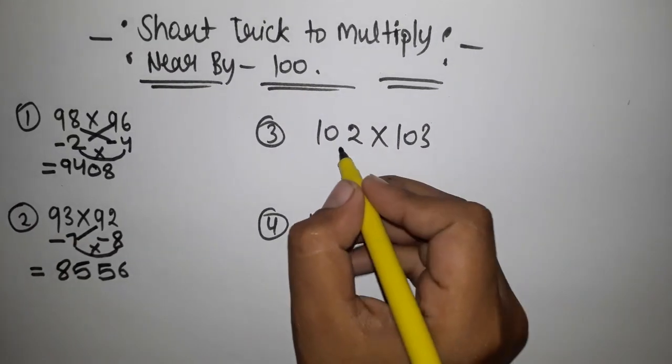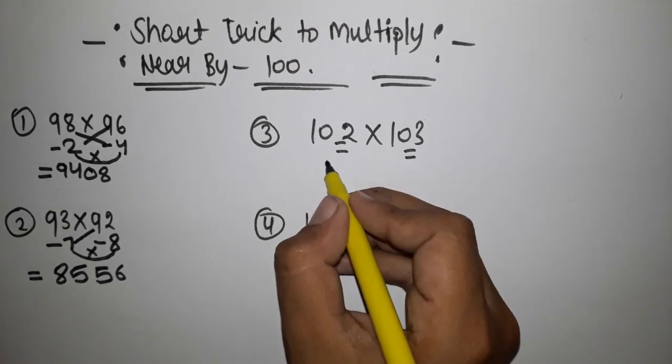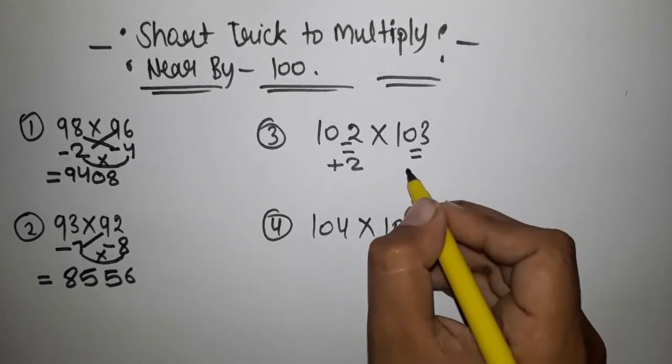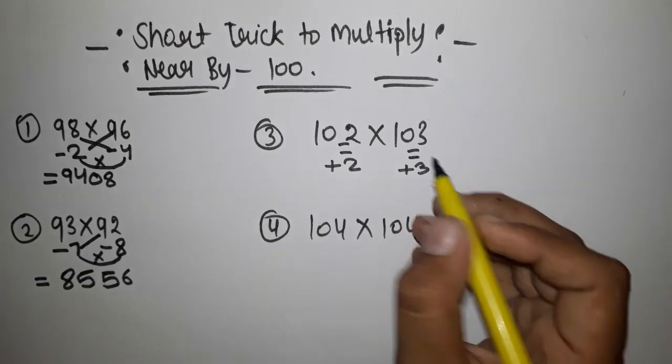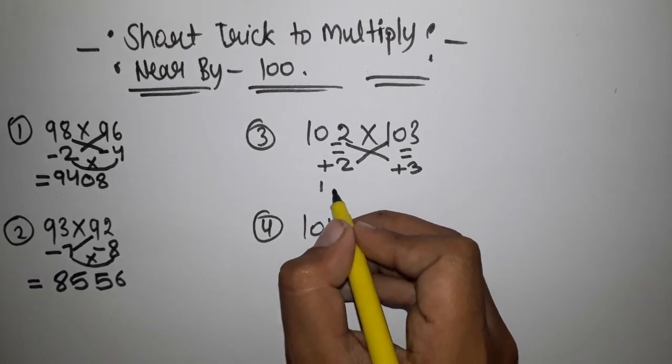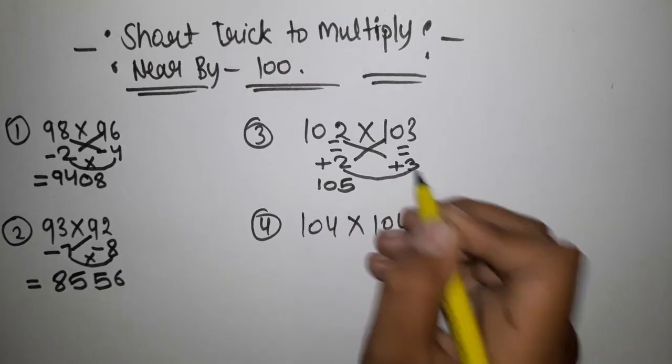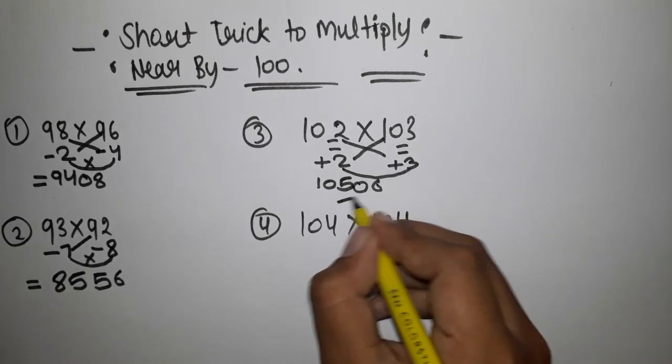Let's see another example. 102 multiply 103. So this is plus 2 from 100 and this is plus 3 from 100. So we have to plus these, and the answer came to 105. Then we have to multiply 2 into 3, which is 06. This is our answer.